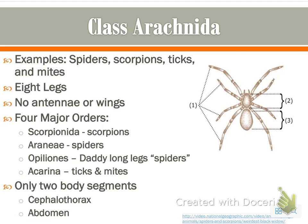The next class is class Arachnida, something most of you are very familiar with. Examples include spiders, scorpions, ticks, and mites. They have a couple of defining characteristics: they have eight legs, no antennae or major wings, and only two body segments — a cephalothorax, which is a combination of the head and the thorax, and the abdomen. Insects have three segments, but arachnids only have two.